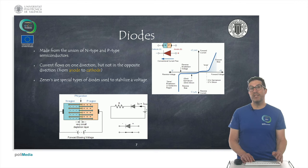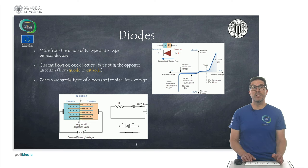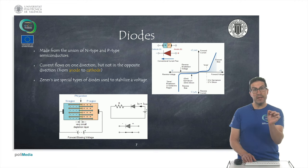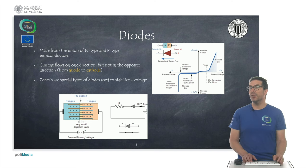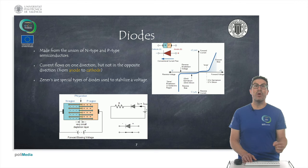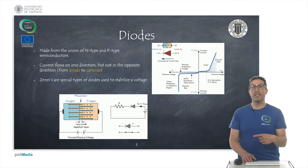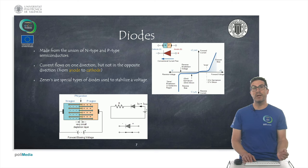A diode is the most basic semiconductor element, made from the union of N-type and P-type semiconductors — doped materials that when put together form a diode. This union is called the PN junction. The main characteristic of diodes is that current only flows in one direction; in the other direction, it behaves essentially like an open circuit. So diodes are used to enable current to flow in one direction while avoiding current flow in the opposite direction.